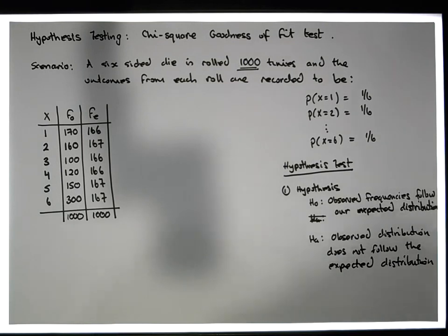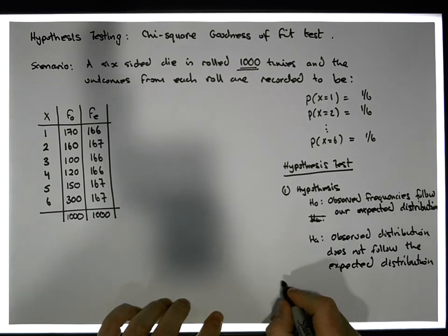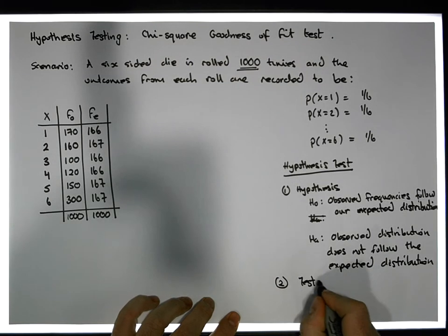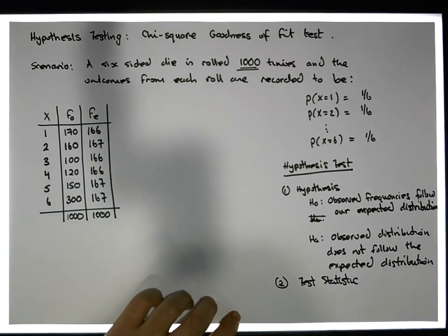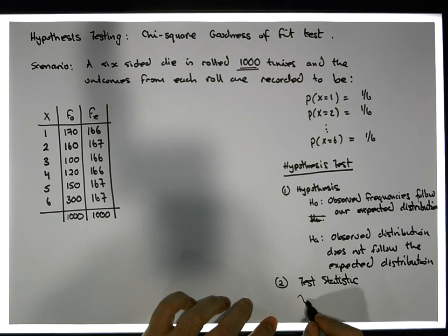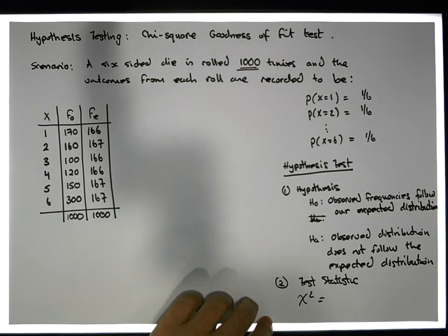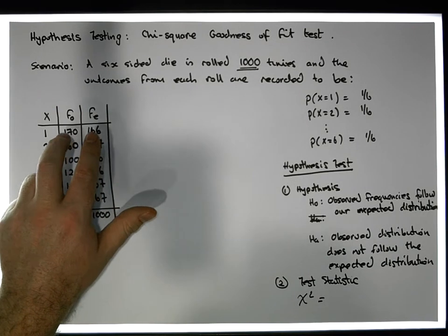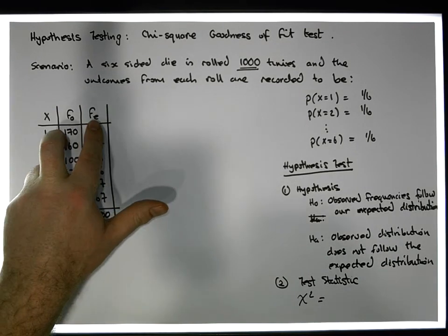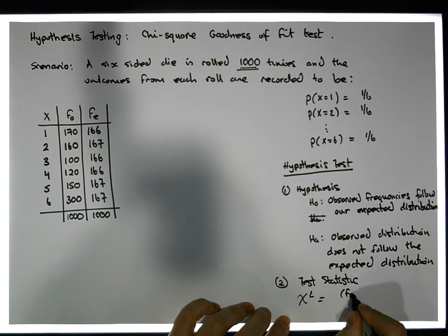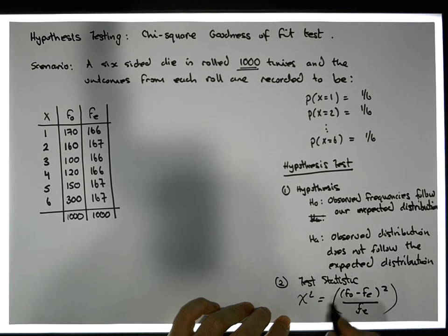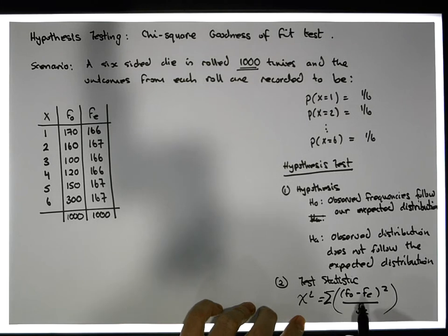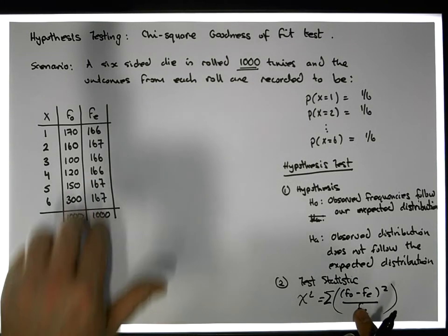And like all hypothesis tests, there's actually a test statistic involved. In this particular case, our test statistic — part two — is going to be the chi-squared test statistic. Chi-squared is equal to the squared difference between the observed and the expected, relative to the expected. So it's the frequency of observed minus the frequency of expected, squared, relative to the expected frequencies — and that's for every single observation.